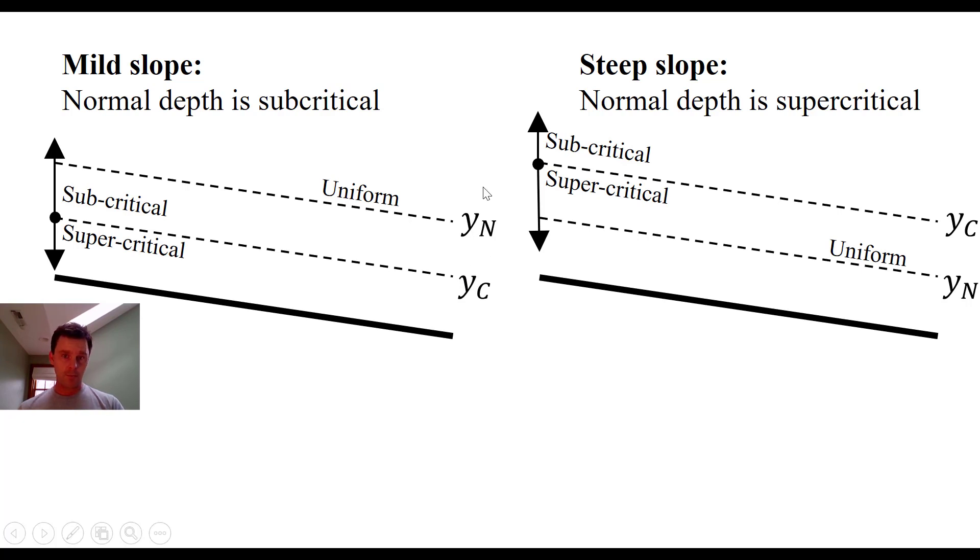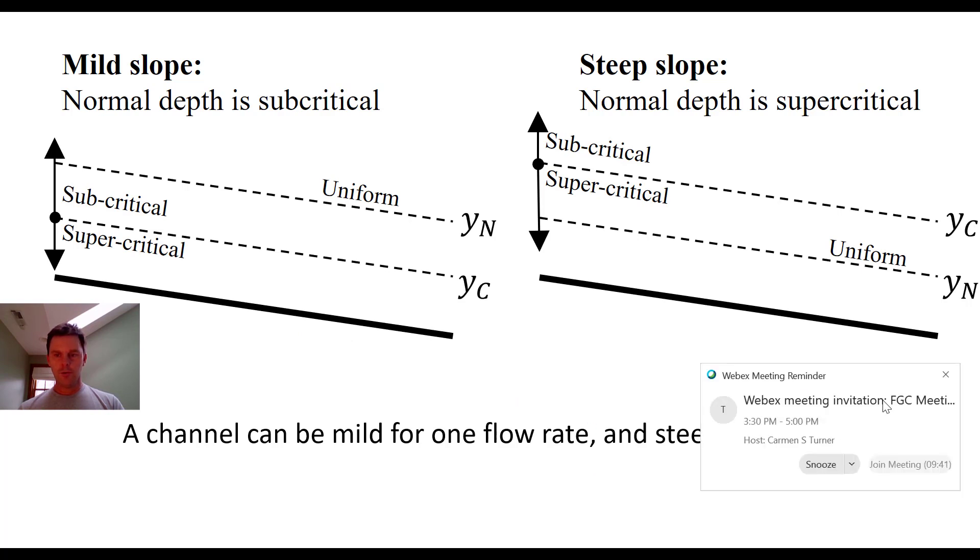And again, the third depth, the actual depth will be anywhere between or outside of those. One mind blowing thing you can think about, maybe when you have a quiet moment and a cup of coffee, is that you could have the same exact channel. And actually, if you vary the flow rate, it could be a steep channel for one flow rate and a mild channel for another flow rate. So I guess what I'm saying is both of these benchmark depths depend on the flow rate. So if you change the flow rate, not only will you bump these critical and normal depths up or down, but they could actually toggle on one another and you could change the slope classification of the channel. So that's kind of a cool thing to think about.